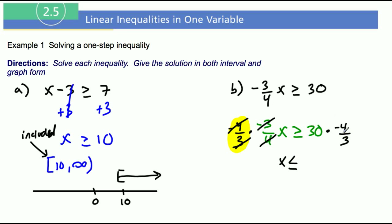The three goes into 30 ten times, so 10 times negative 4 is negative 40.